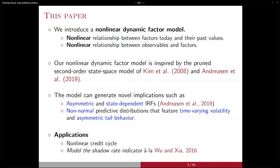It's a very simple model, but out of it we can generate some of the factors seen in previous presentations. For example, we can generate asymmetric impulse response functions in the sense that a positive shock has a different impact than a negative shock. It's also state-dependent — the same shock will have different implications in a financial crisis versus normal times. The predicted distributions display non-normalities, and time-varying volatility emerges as an endogenous element of the model without introducing stochastic volatility explicitly. We'll also talk about asymmetric tail behavior.